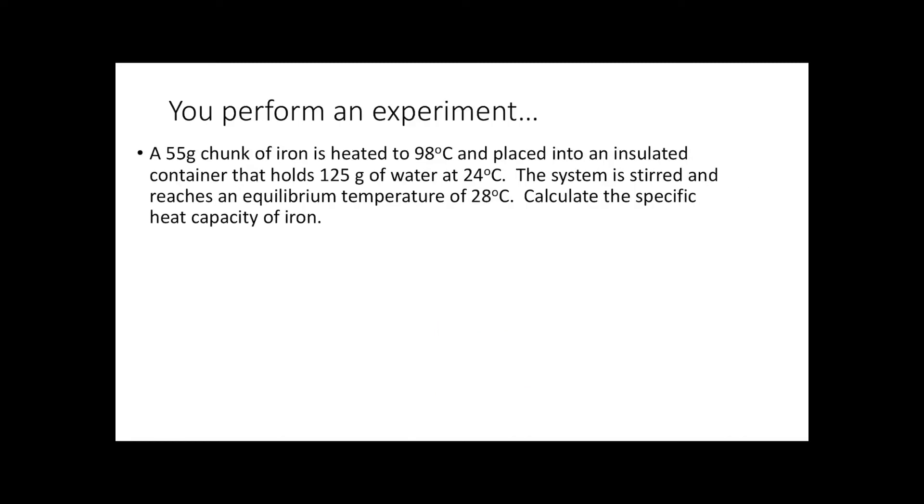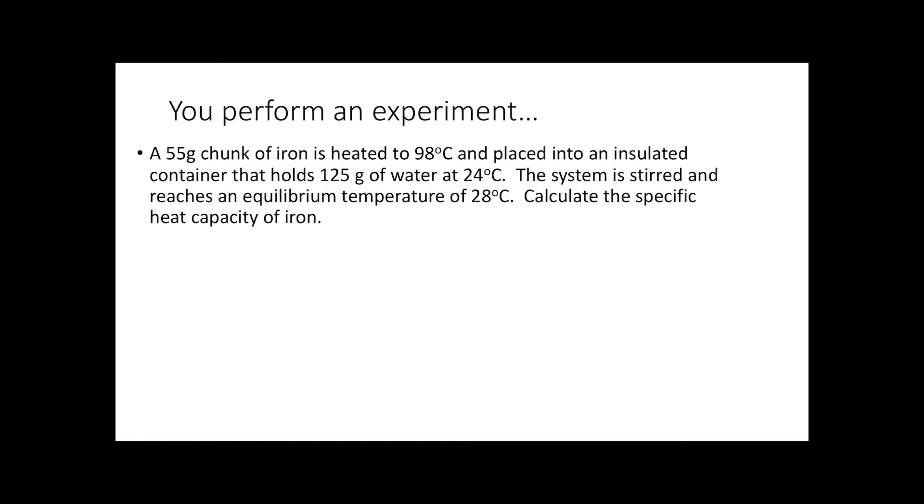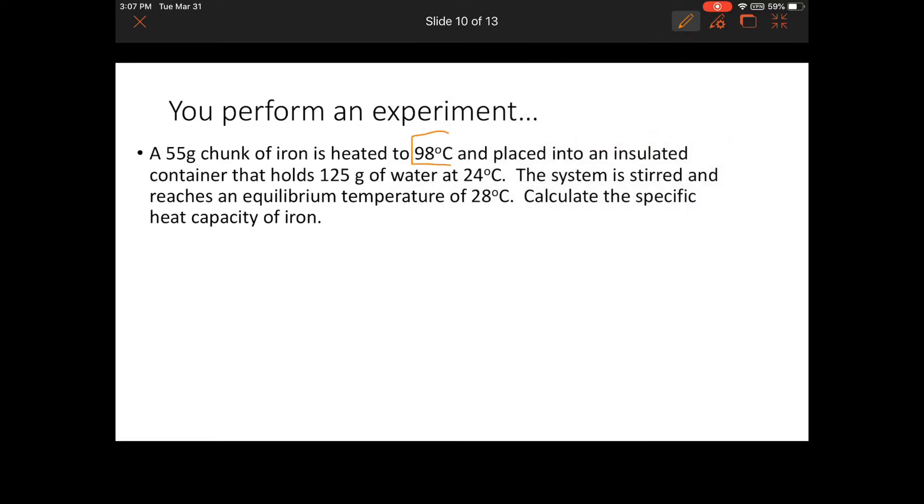Here's an example. Imagine you heat up a 55 gram chunk of iron to 98°C and place that iron into an insulated container, a calorimeter, with 125 grams of water at 24°C. When you combine them, they reach thermal equilibrium at 28°C. These are our starting temperatures.